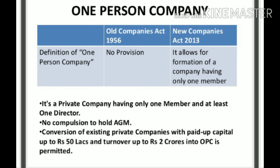Another main feature included in the Companies Act 2013 is the One Person Company. There was no such provision in the Companies Act 1956. The new Act allows for the formation of a company having only one member. A private company with only one member must also have at least one director, with no compulsion to hold an Annual General Meeting. A One Person Company with paid-up capital up to 50 lakhs and turnover up to two crores is permitted.